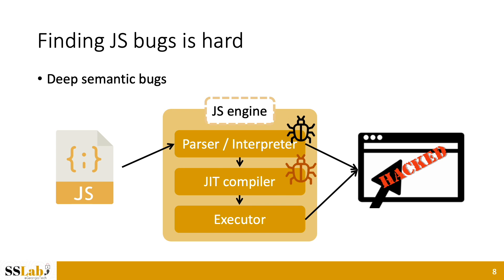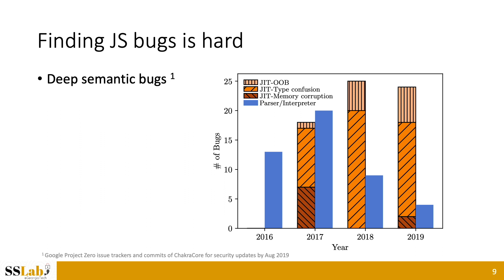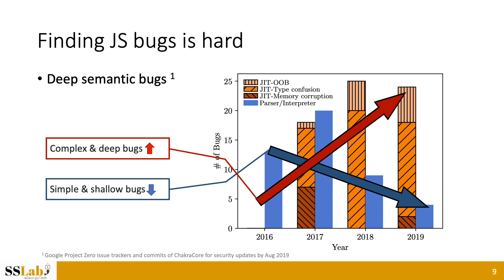Many bugs found recently are going deeper into code paths. For example, a JavaScript engine consists of a parser and interpreter at a high level, and several layers of JIT compiler and executor. Many simple bugs located in the parser and interpreter can be found by simple API fuzzing. However, most bugs in recent days are located in the JIT compiler, due to wrong optimization. The trend shows that parser, interpreter, and memory corruption bugs are decreasing, while out-of-bounds and type confusion bugs in the JIT compiler, which are more complex and deep, are increasing.